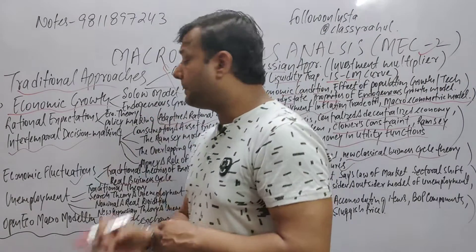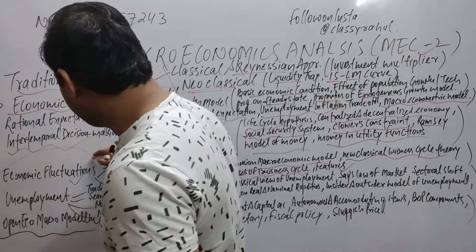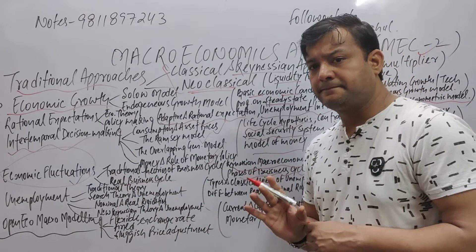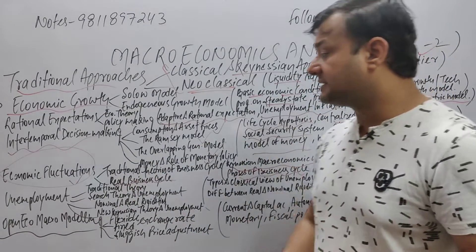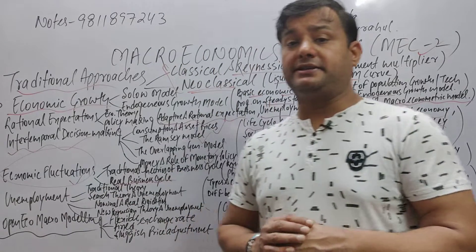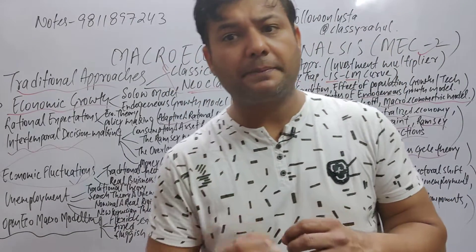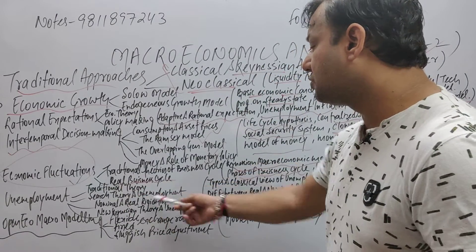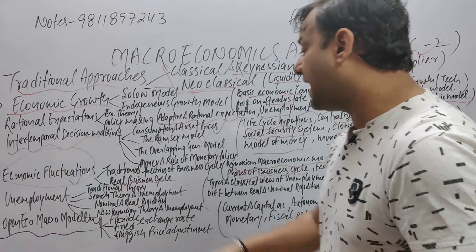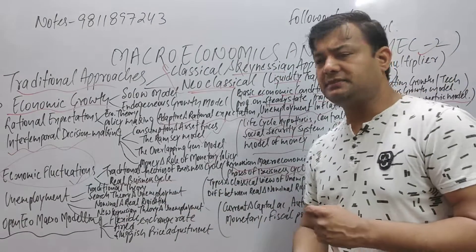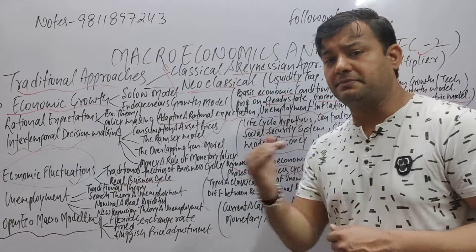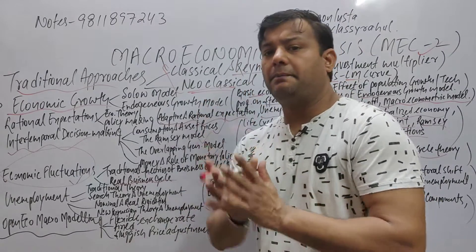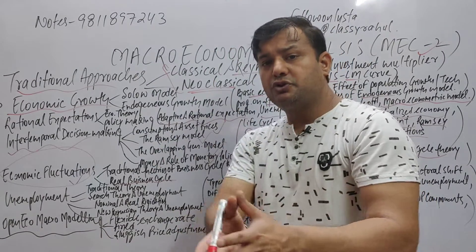This entire part — economic fluctuations — is in my view the most important part of this paper and should be given first priority. Then jump to the next part: unemployment. Again a theoretical part dominant from a paper perspective. We have traditional theory, search theory, and unemployment — nominal and real rigidity — and new Keynesian theory and unemployment. Keynesian concepts appear in 4-5 topics across 3-4 blocks — so Keynesian-related questions are confirmed to appear in the paper.